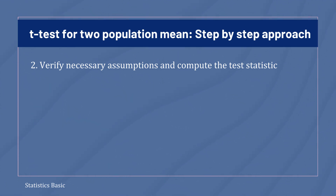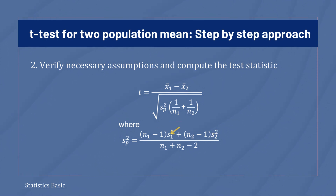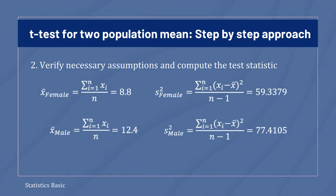Now, to calculate the test statistic, which is the t-statistic, use the following formula. A t-statistic for the difference between the two population means gives the standardized distance between the two population means. In the t-statistic formula, x-bar is the sample mean, s-squared is the sample variance, n is the sample size, and s-p-squared is the pooled variance of the two populations. Use the following formula to calculate the sample mean and the sample standard deviation, and put these values in the t-statistic formula.